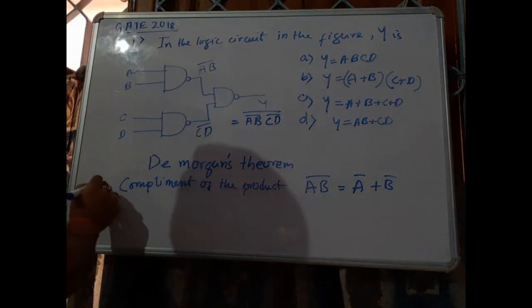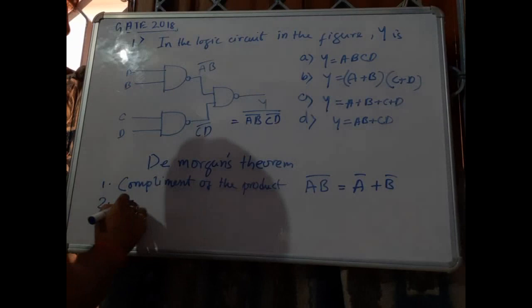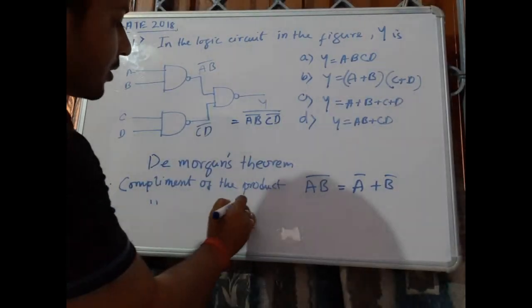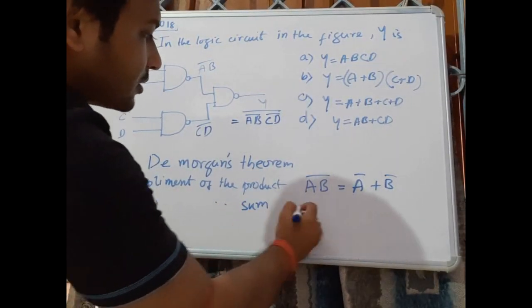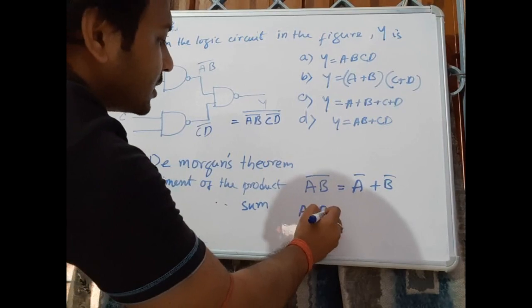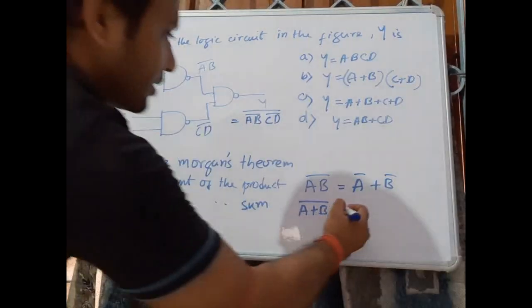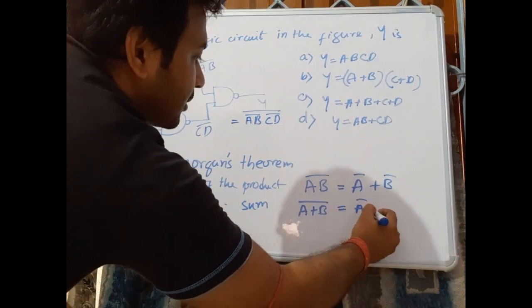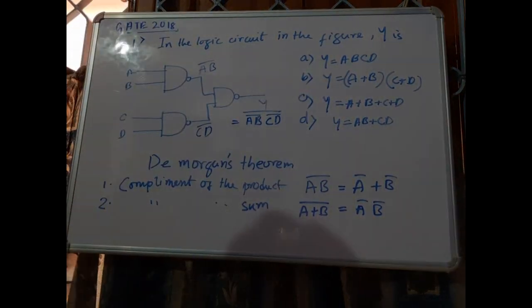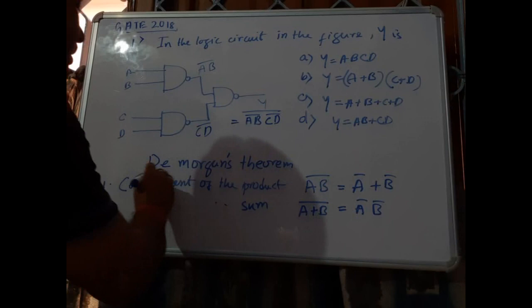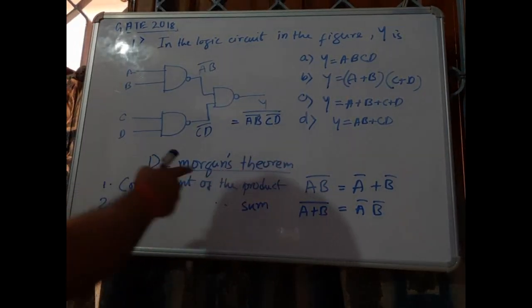Now this is theorem number 1, and theorem number 2 is for complement of sum. So a plus b whole bar means sum, and complement equals a bar b bar, a bar into b bar. So these are the two theorems coined by De Morgan.